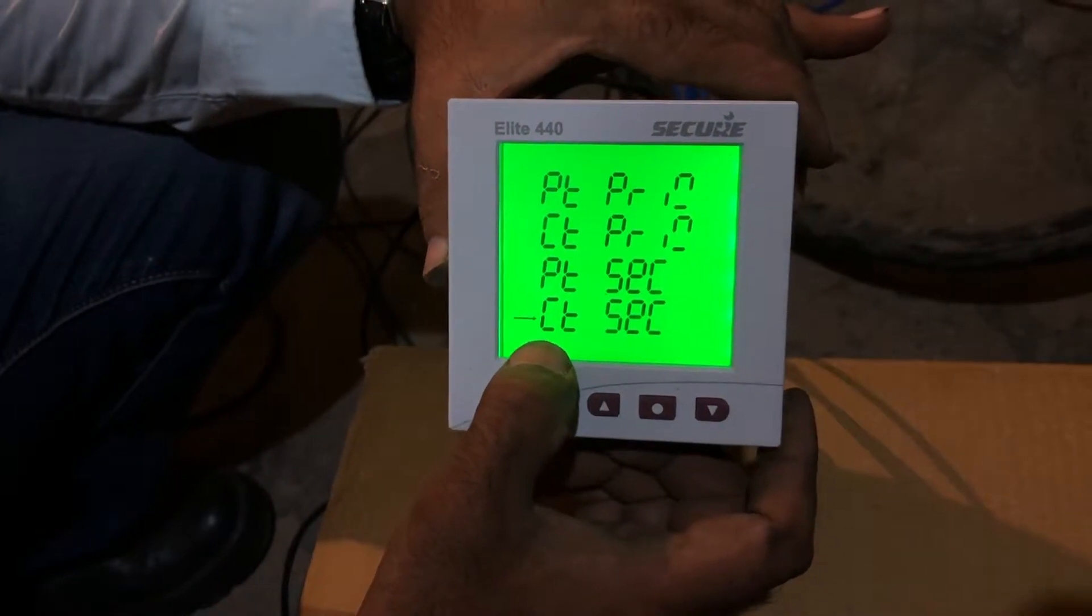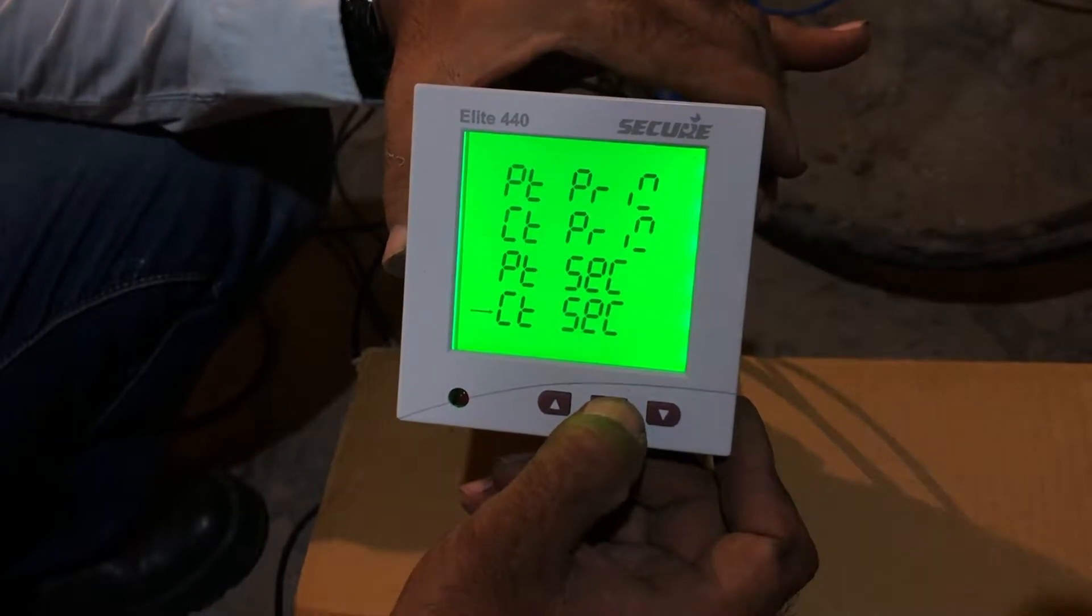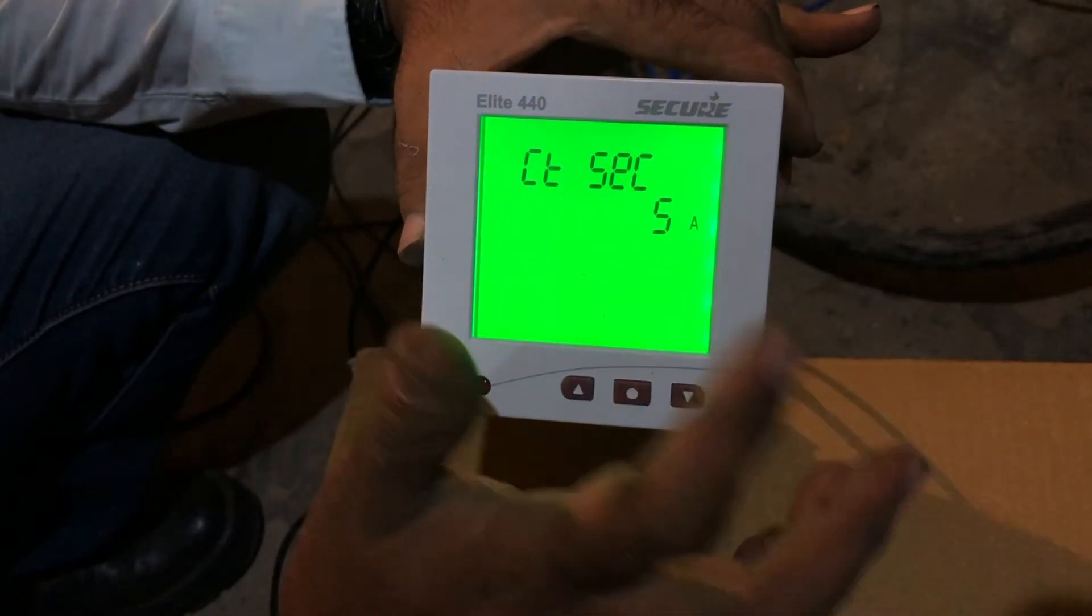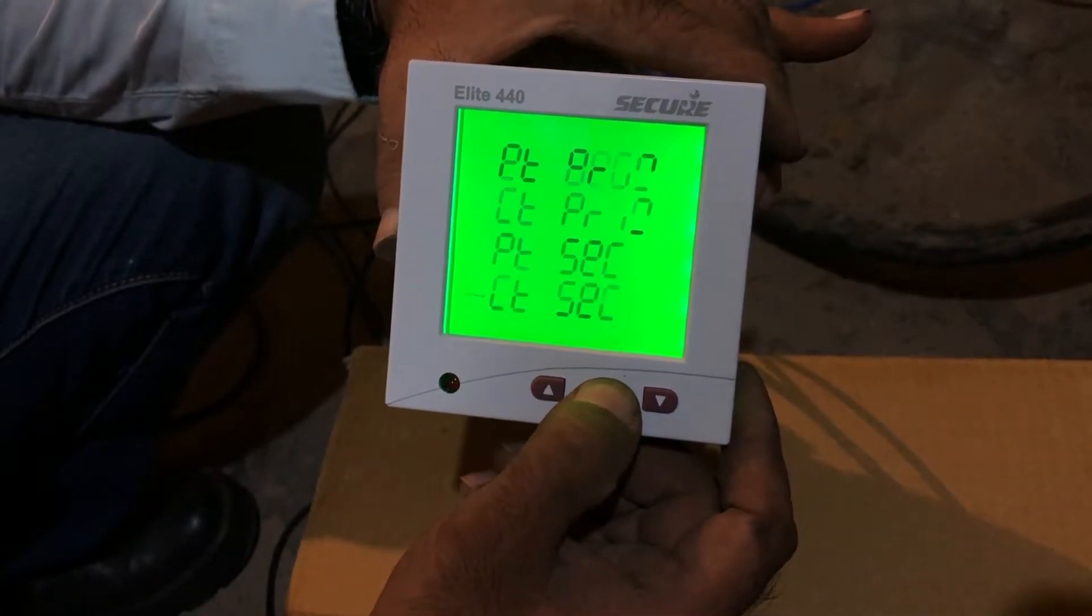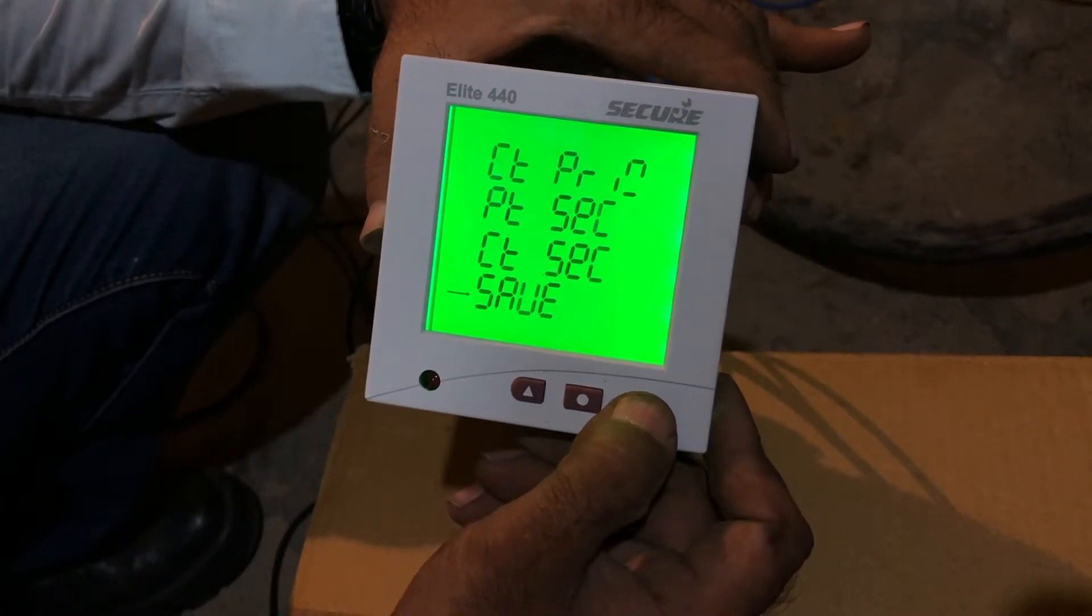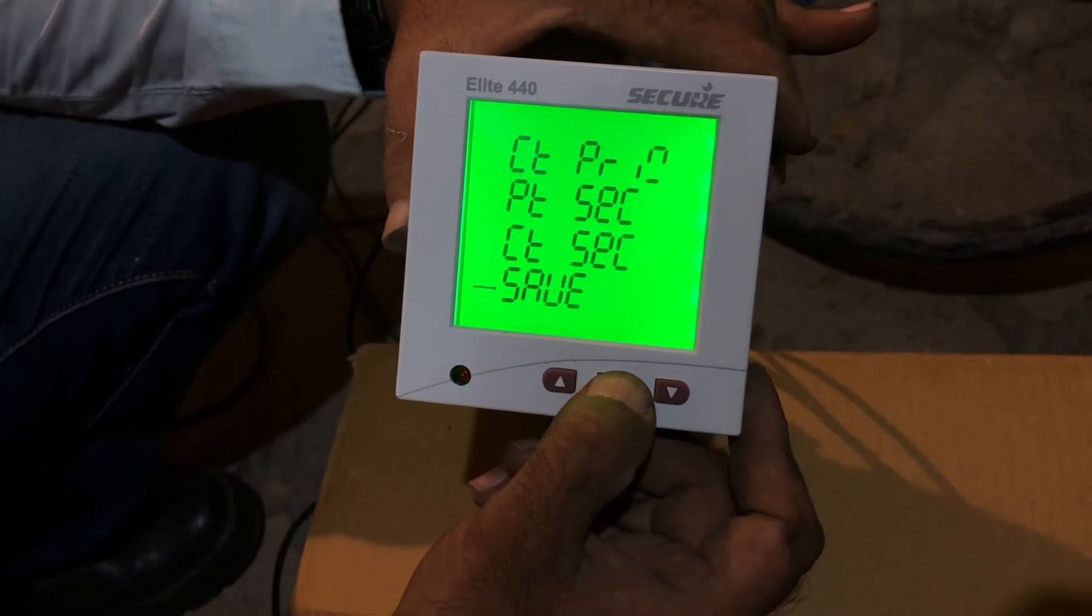Which says CT second in the menu. We'll press enter and put the desired value which is 5 ampere in our case. We again press enter and move on to save the settings.